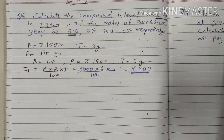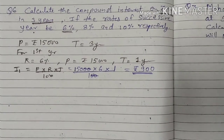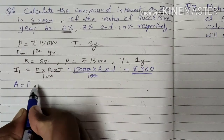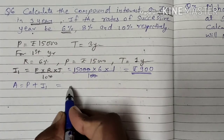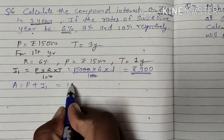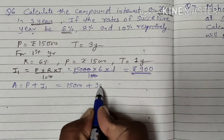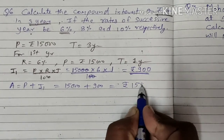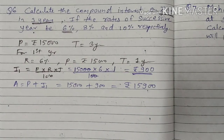Calculate the amount for the first year. Principal plus Interest 1 gives us 15,000 plus 900, that is Rs. 15,900. Is that clear to everyone?